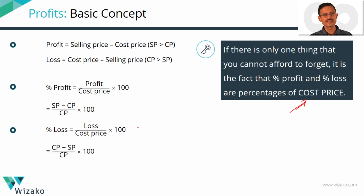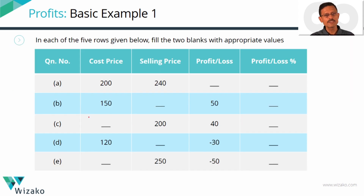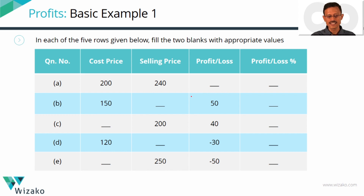Let's do a couple of exercises to consolidate how to find percentage profit, percentage loss, cost price, and selling price. This lays the ground for solving questions going forward. Start with this table — pause the video, complete the blanks in these five rows, then come back to check your answers. We'll start with the blanks first and then compute the profit and loss percentages subsequently.